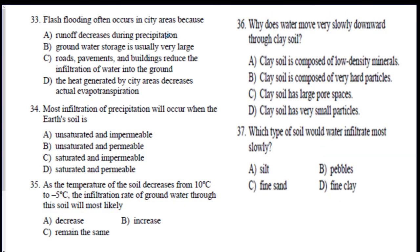Alright, let's do a couple of practice questions. Number 33. Flash flooding often occurs in city areas because why? Your best answer here is C. The roads and pavement is going to make the water not be able to go into the ground, which is going to cause flood. 34. Most infiltration of precipitation will occur when the earth's soil is... We did a question just like this. Most of it will be going into the ground when the ground is unsaturated, meaning not full, and permeable, meaning it's able to move water through it. B. As the temperature of soil decreases from 10 degrees to negative 5, negative 5 degrees, that's freezing, so the ground froze. What happens to the infiltration rate of the water through the soil? Well, if the ground's frozen right now, it should go down. It's not going to be able to move through it.